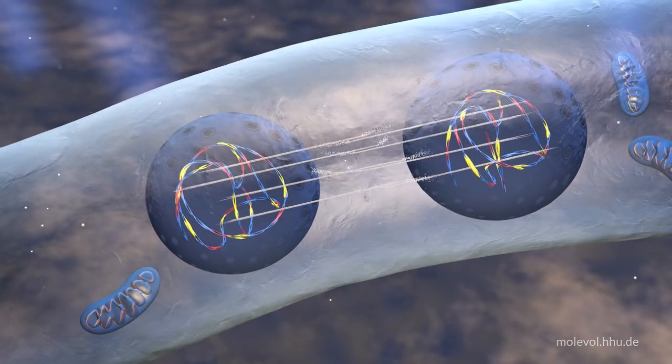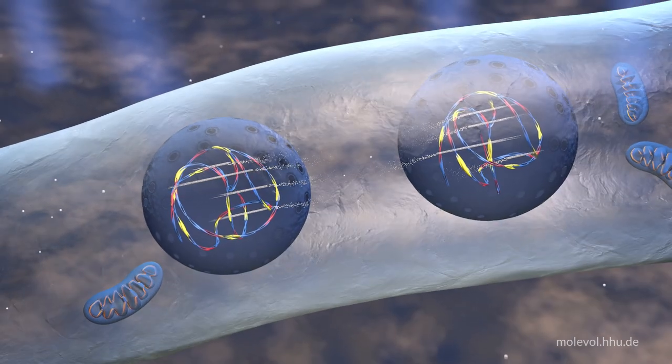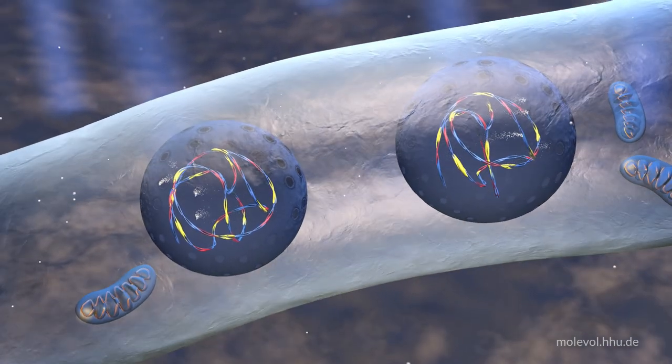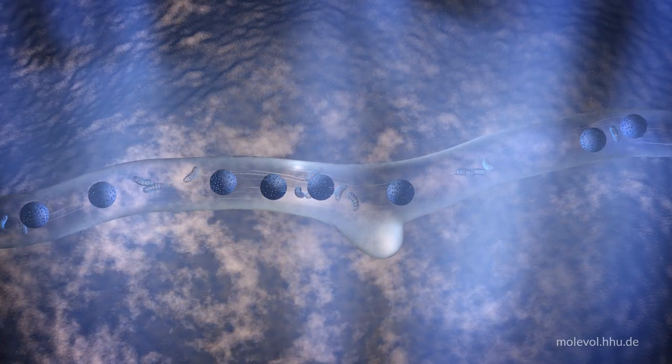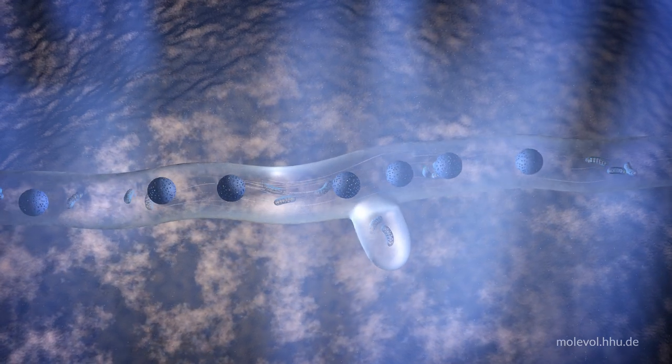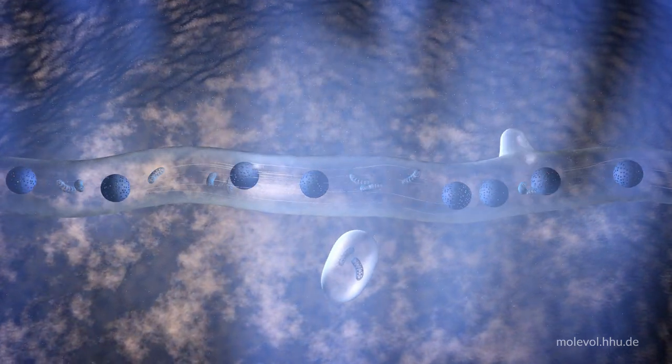Nuclear division is essential for survival and growth, but cell division can wait, and all major eukaryotic groups harbor lineages with multinucleated cells. The very first eukaryotes likely had a continuously multinucleated, or syncytial, lifestyle.